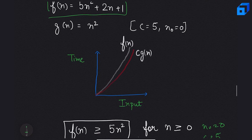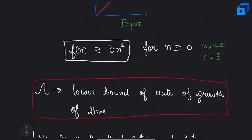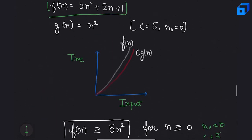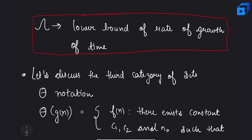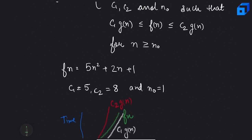As seen in the graph, f(n) always exceeds c·g(n) after n₀. So Omega notation represents the lower bound of the rate of growth of time. Now let's discuss Theta notation. For Theta notation, there exist constants c1, c2, and n₀ such that c1·g(n) ≤ f(n) ≤ c2·g(n) for all n ≥ n₀.